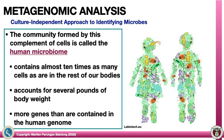The Human Microbiome Project provides us with what organisms are present per organ system of the human body. The community formed by this complement of cells is called the human microbiome. It contains almost 10 times as many cells as are in the rest of our bodies, and it accounts for several pounds of your body weight. They say that we are just 46% human cells and more than 50% microbial cells.